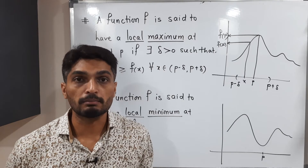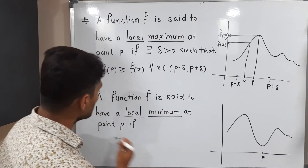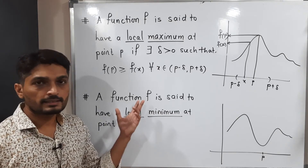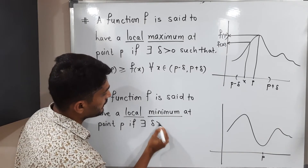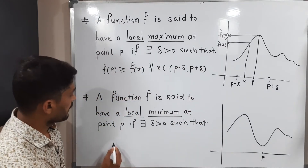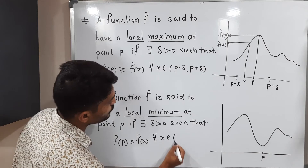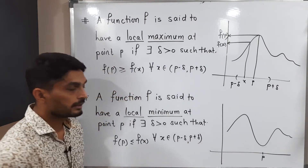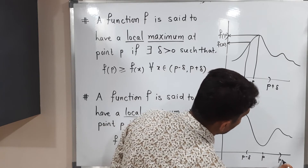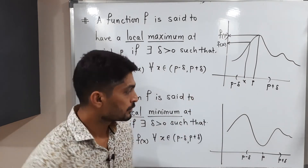So we say the function has a local maximum at point P. In the same way, we can define local minimum. A function has a local minimum at point P if there exists Delta greater than zero such that F of P is less than or equal to F of X for all X belonging to (P minus Delta, P plus Delta). We define this neighborhood by subtracting Delta from P and adding Delta to P.